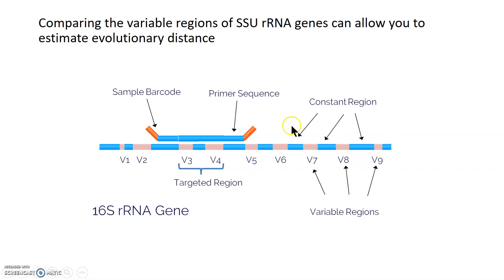The differences really exist between the variable regions. Constant regions remain constant between different types of bacteria; variable regions have sequences that vary between those bacteria. So you can look at the sequence of the variable regions and compare them from bacterium to bacterium to see differences.